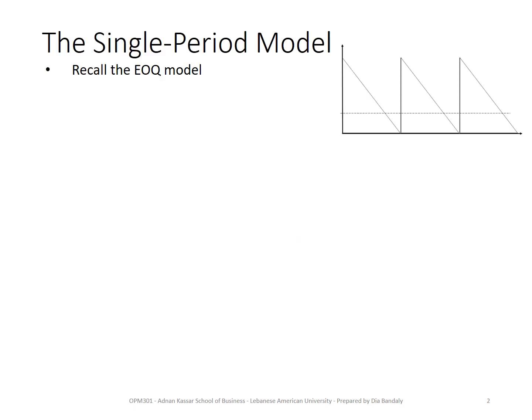To understand the importance and strength of the single period model, let's go back and remember the EOQ model, which is the basic model where demand is assumed to be known and at a constant rate — which explains this straight line. When we stock a certain level of inventory Q, we were depleting our inventory at a constant rate.